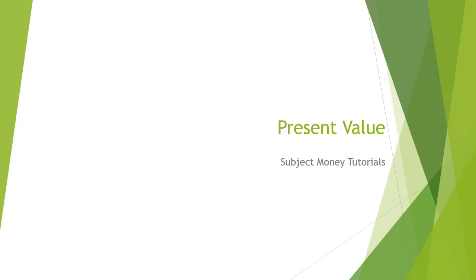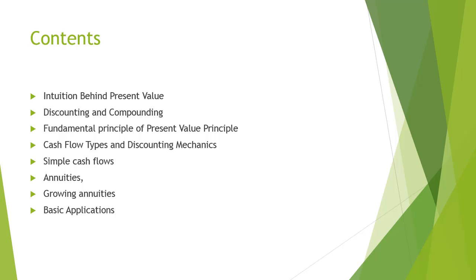Let us check out the contents that we are going to cover in this presentation. This tutorial will start by throwing some light over intuition behind present value, and then discounting rates as well as compounding of cash will be discussed in detail. The fundamental principle of present value will be elaborated later on, followed by cash flow types and discounting mechanics. Three types of cash flow, namely simple cash flows, annuities, and growing annuities, will be discussed here, while two types of cash flow will be taught later on.